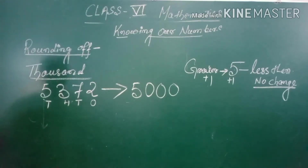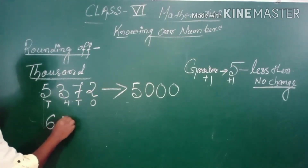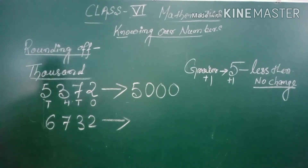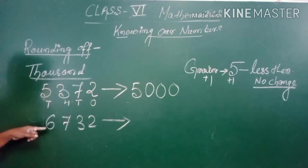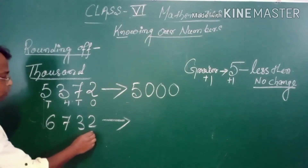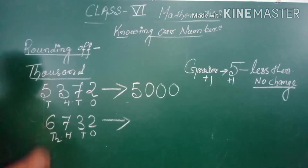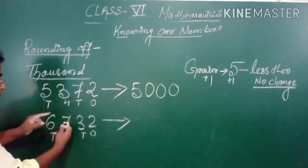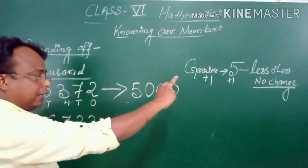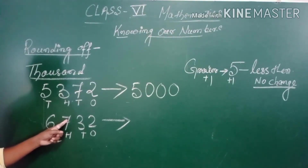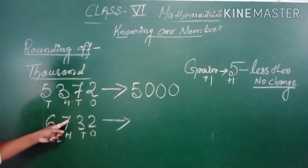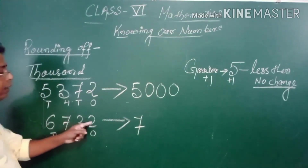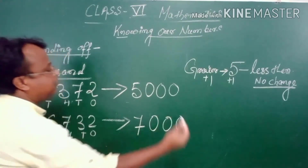Let us take another example: 6732. We are rounding up to the nearest thousand. The thousands digit is 6. The next digit is 7. Is 7 less than or greater than 5? Obviously greater than 5 — so we add 1: 6 plus 1 equals 7. The remaining digits become 0. So 6732 rounded to nearest thousand is 7000.